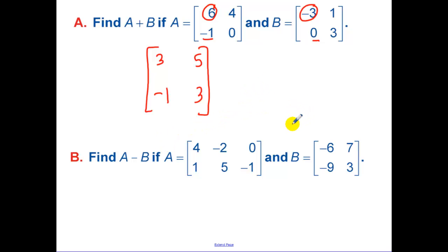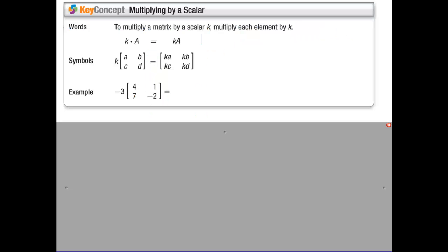Now subtract these matrices. Do these matrices have the same dimension? A is a three by two matrix and B is a two by two matrix. The dimensions aren't the same. So we would put not possible. Our dimensions aren't equal. The dimensions have to be equal when we're adding or subtracting.